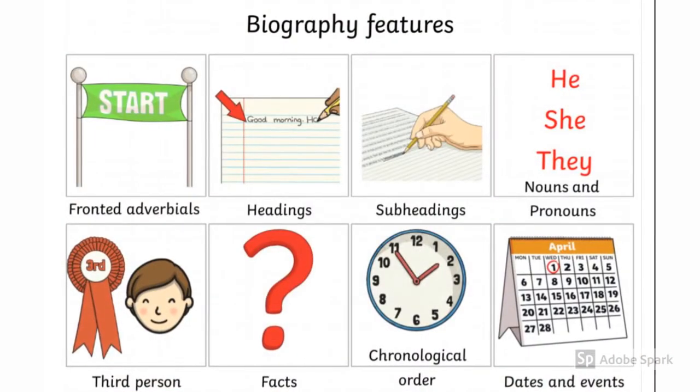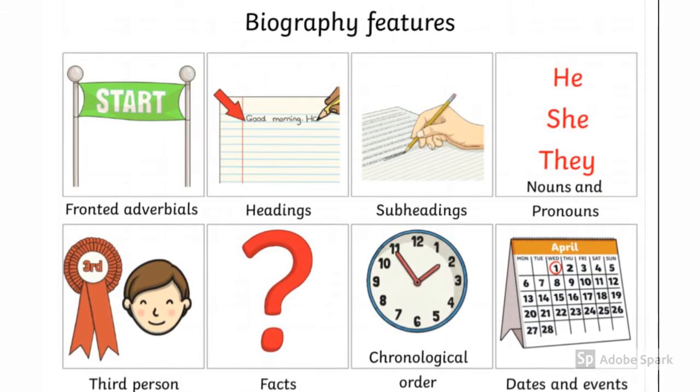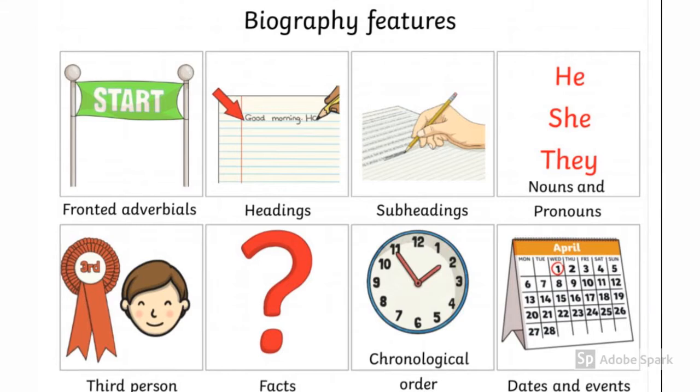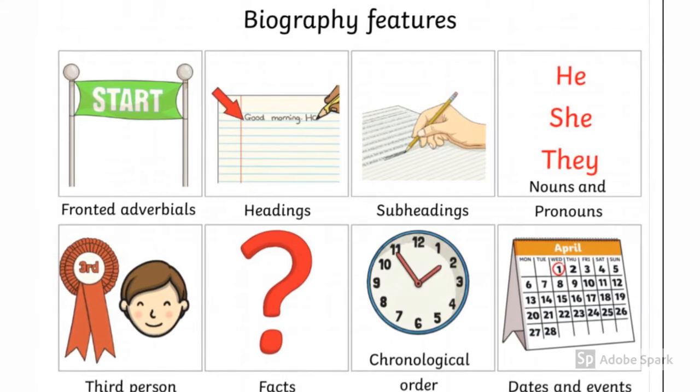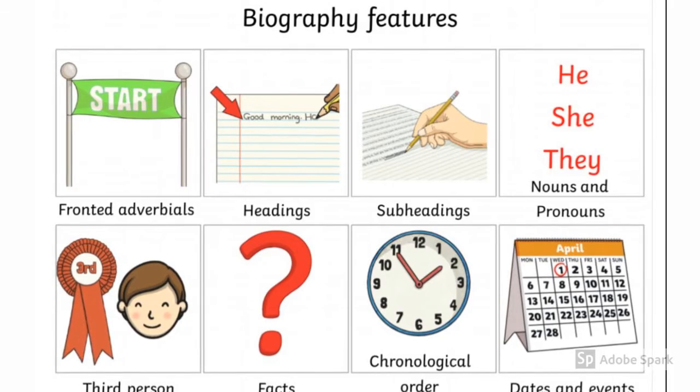Using the information that we have collected, as you've just seen in the previous slide, I'm going to show you how we change the first introductory paragraph using the information you've collected into something to start a biography. It is important to remember the features of a biography that we went through previously: we have fronted adverbials, headings, subheadings, pronouns, third person writing, facts. It's in chronological order and of course it is full of dates and events.